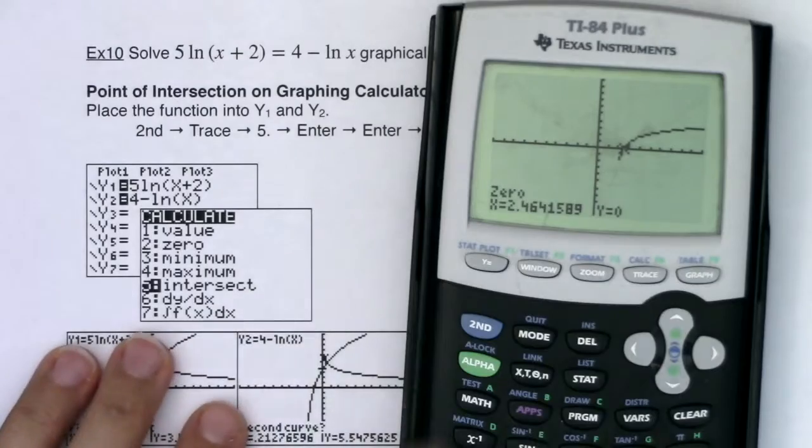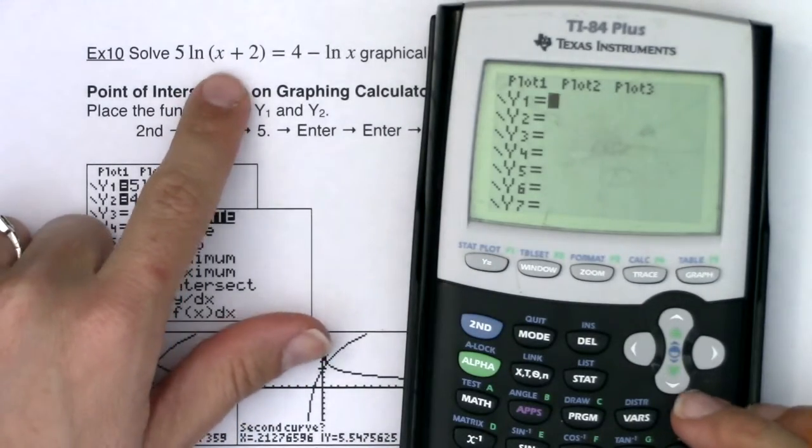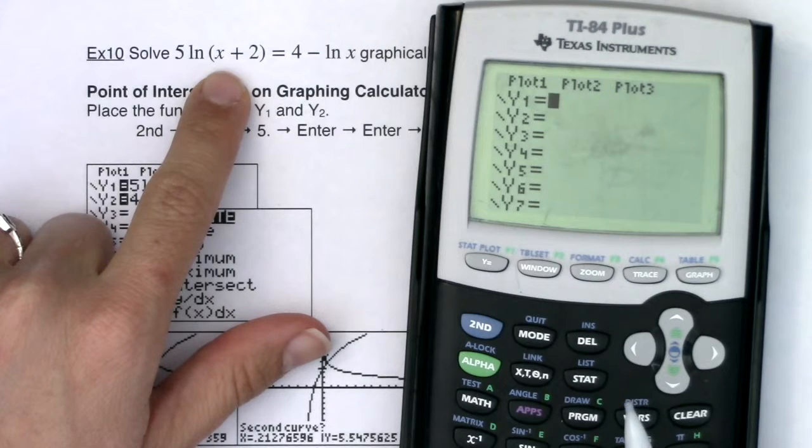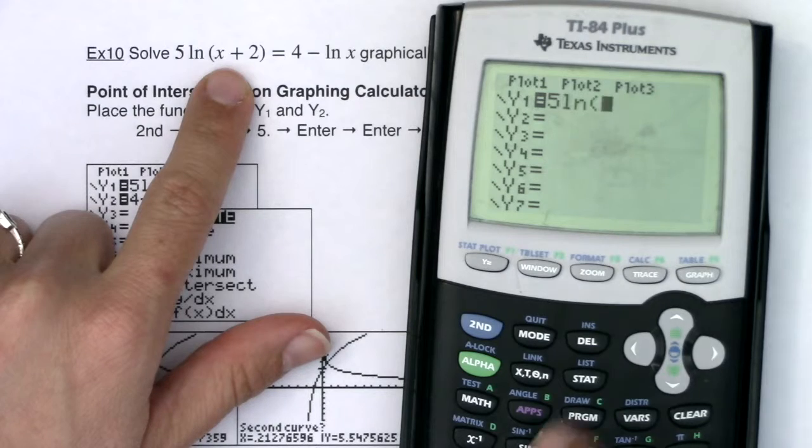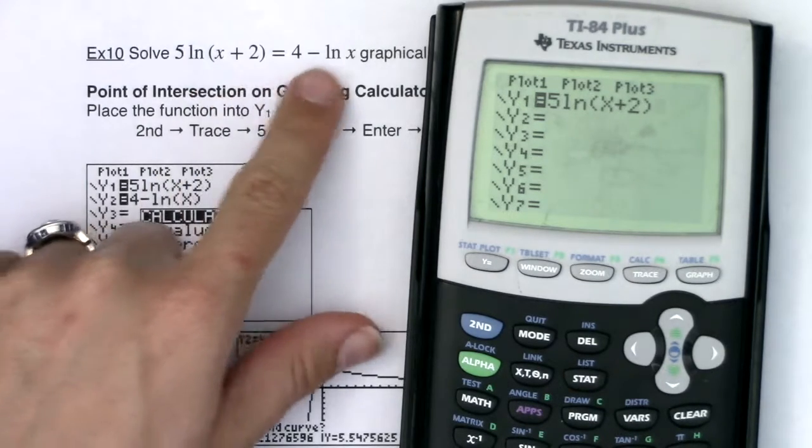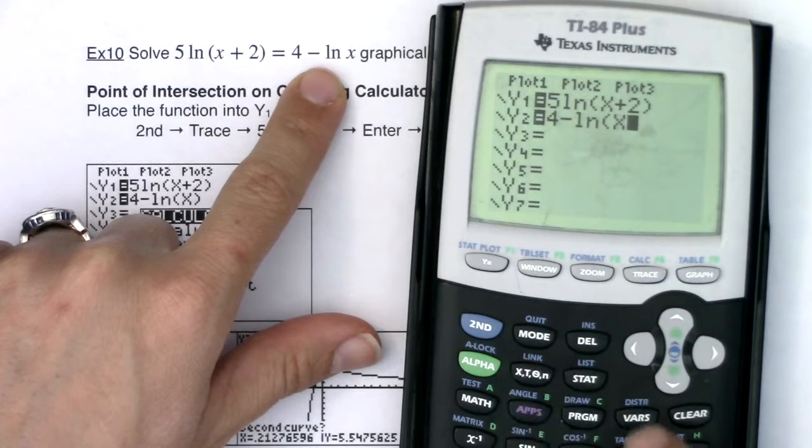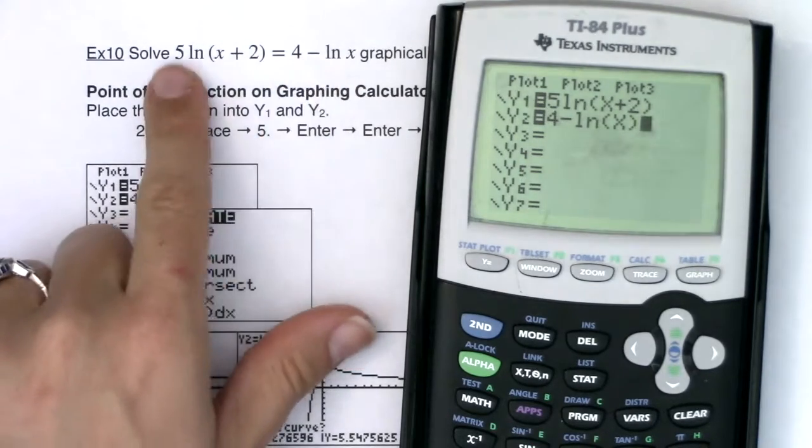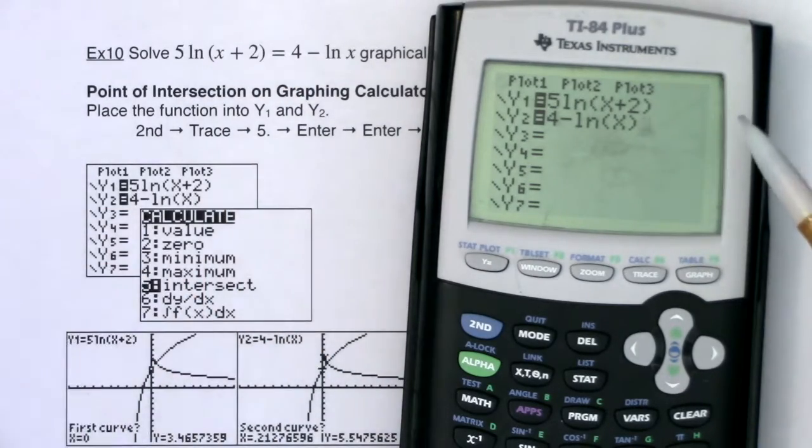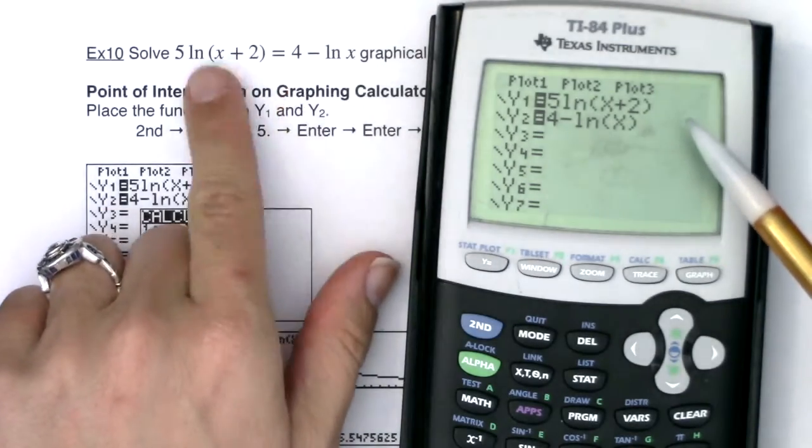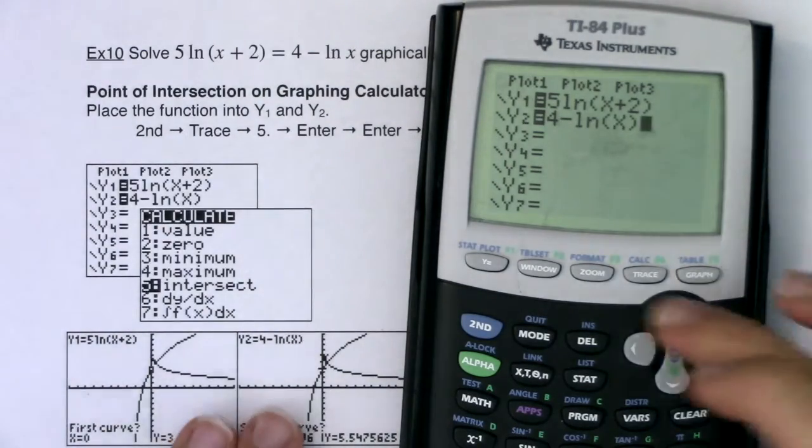So what we're going to do is we're going to go into our y equals, clear out whatever I had before, I'm going to put the left expression or the expression in the left side of my equation into y1 and I will put the expression on the right side of my equation into y2. And once you have those two expressions entered into your calculator, what we would like to do, if we want to see where these two functions are equal, we want to see where they intersect in terms of their graph.